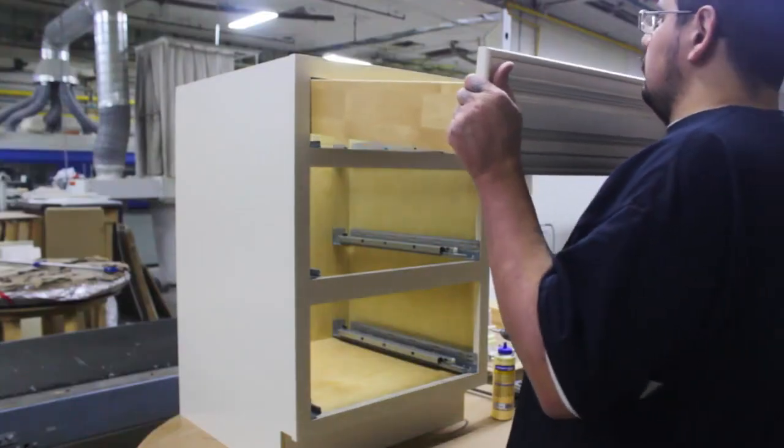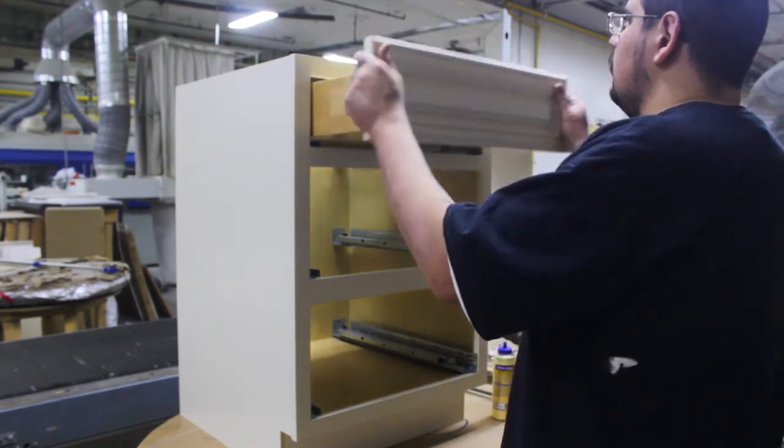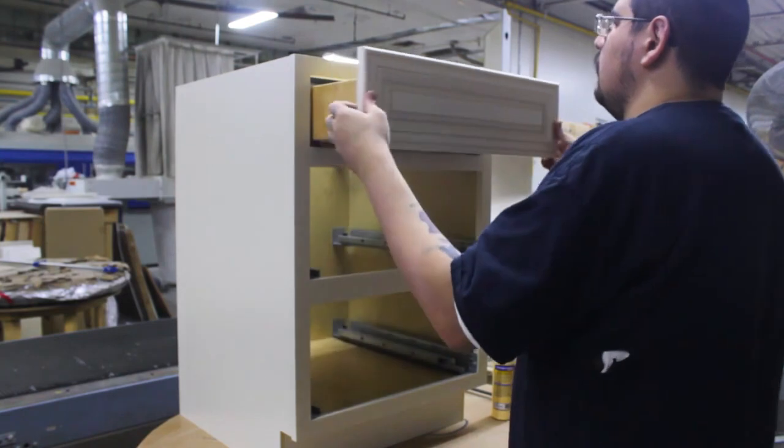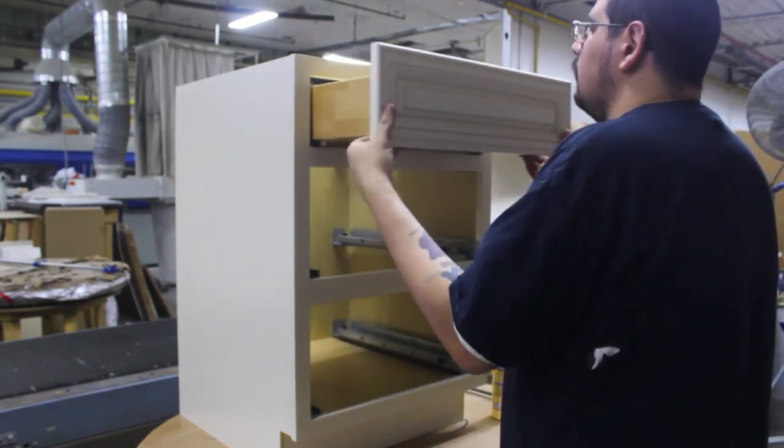Take your completed drawer or drawers and slide into the cabinet until your glides click into place. If they don't connect, pull the glide out and slide into the connector by hand until it clicks into place.